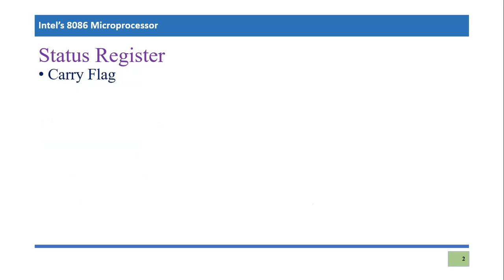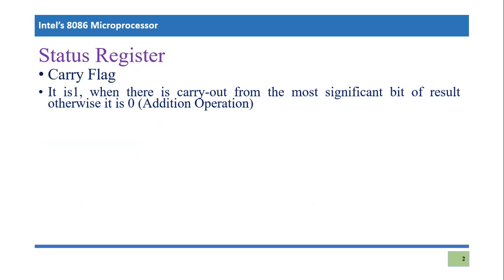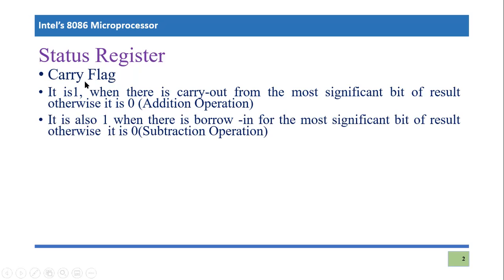Let's discuss them one by one. First of all, the carry flag. It becomes one when there is a carry out from the most significant bit of the result; otherwise it is zero, and it applies to the addition operation. Carry flag is quite easy to understand — whenever you perform a 16-bit addition and your result appears in 17 bits, you won't have sufficient bits to show the full information. That is why the carry flag is used. Similarly, in subtraction, if you subtract a larger number from a smaller number, you need to take a borrow, and that borrow is indicated in the carry flag.